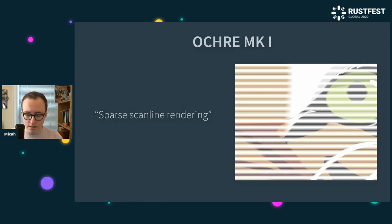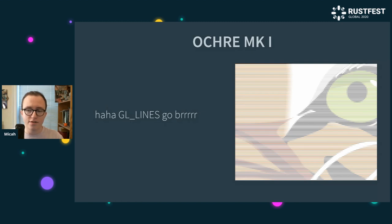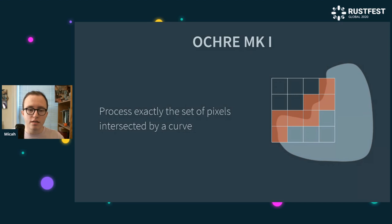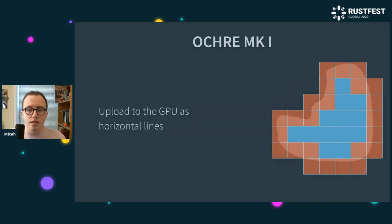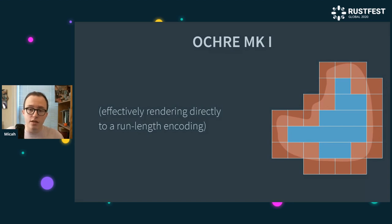I was searching for something that struck that trade-off better for UIs, and this was the first thing I got really excited about — I call it sparse scanline rendering. The way it works is it only renders the pixels that are intersected by the outlines, and then it uploads those as horizontal lines to the GPU. I also like to call it the GL lines go burr architecture. You can see on this diagram that anything not intersected by the curve doesn't have to be processed on the CPU — it just gets filled in by the GPU, which is good at simple highly parallel tasks. You can see here what the horizontal lines look like that get uploaded to the GPU. You can actually think of this architecture as run-length encoding the image — you upload less data and compute less data because you inherently skip all the work of the solid spans.